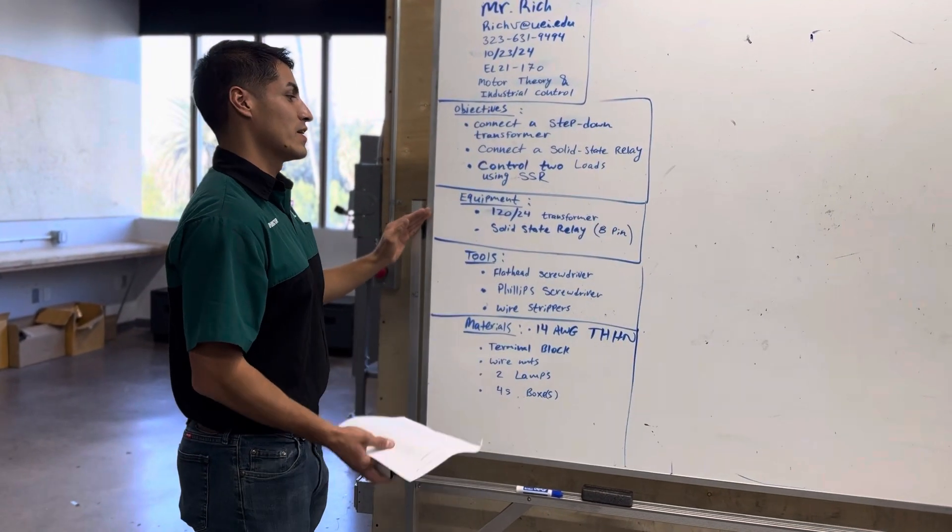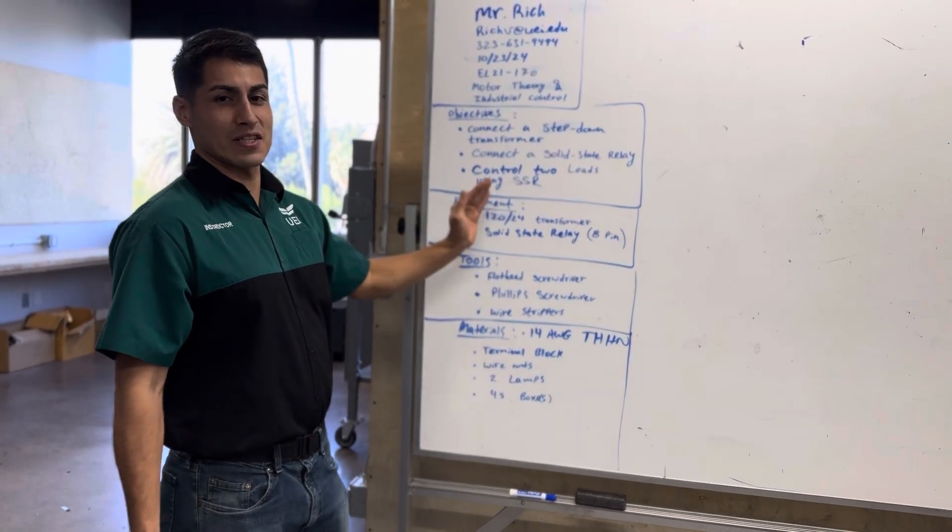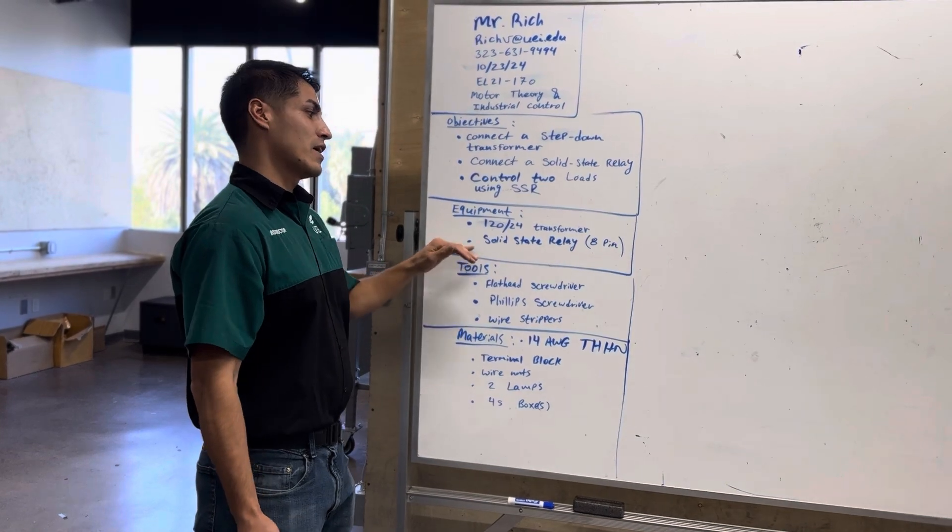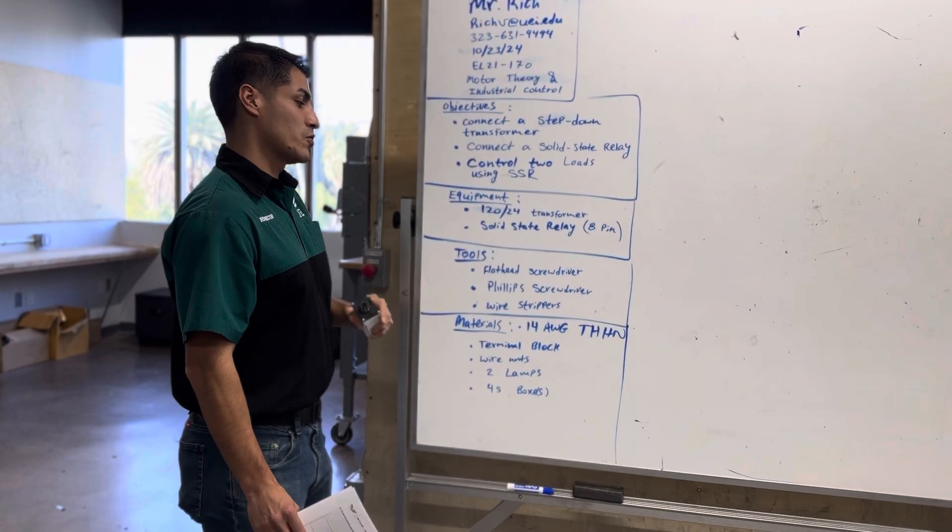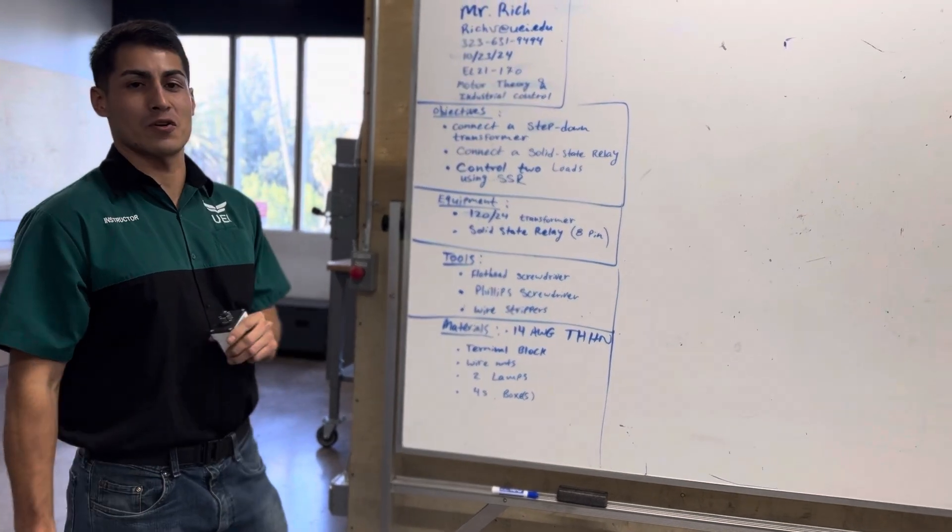The equipment we need is a 120-24 step-down transformer and a solid-state relay. The tools that we're going to need are a flathead screwdriver, Phillips screwdriver, and wire strippers.